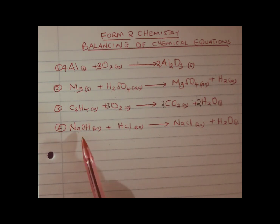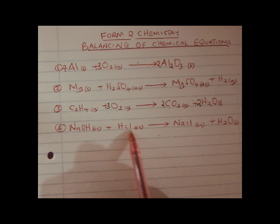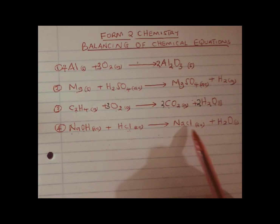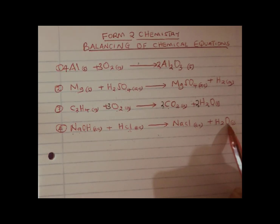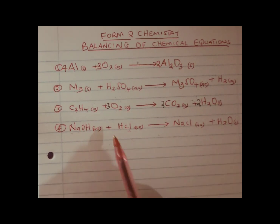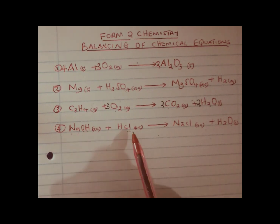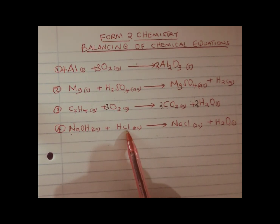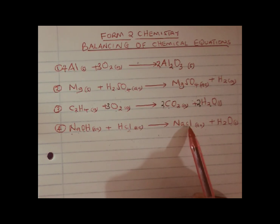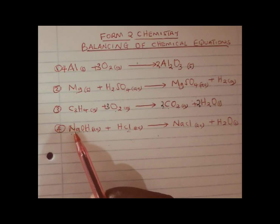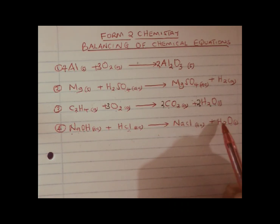Let us try to balance. We have 1 oxygen on the reactant side and also 1 on the product side. Hydrogens: we have 2 on the product side and 1 + 1 = 2 on the reactant side. We have 1 chlorine on the reactant side and 1 chlorine on the product side. So this equation is automatically balanced.